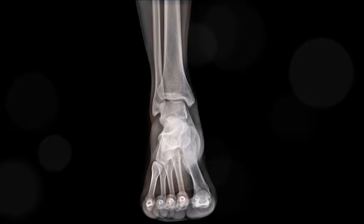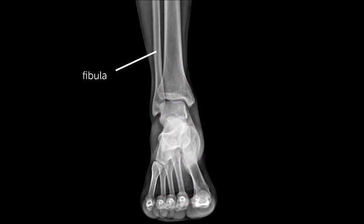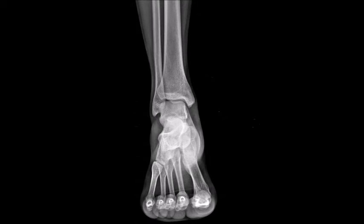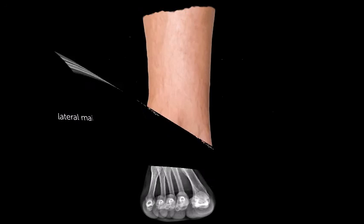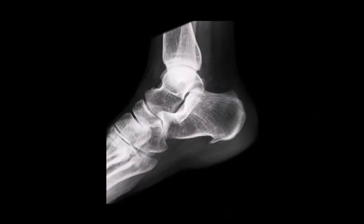The AP ankle x-ray shows the major bones of the ankle, including the fibula, tibia, and talus. The ankle has a lateral and medial malleolus; notice that the lateral is slightly inferior. The tibial plafond is the articulating surface of the distal tibia. The lateral view of the ankle provides us with a profile of the talus and the talar dome, where it articulates with the tibia.